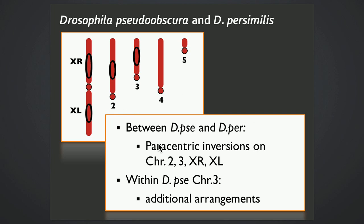And then we have within-species crosses where we're taking advantage of the additional inversion polymorphisms on the third chromosome of pseudoobscura.